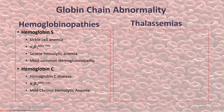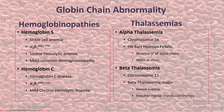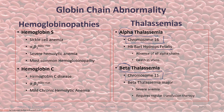Thalassemias are named according to the chain that is reduced or absent during synthesis. We have alpha thalassemia for the alpha chain being affected, beta thalassemia for the beta chain, and also gamma thalassemia and so on. In alpha thalassemia there is a genetic mutation in chromosome 16, and in beta thalassemia there is a genetic mutation in chromosome 11. There are four types of alpha thalassemia. An example is hemoglobin Bart's hydrops fetalis, a condition where all of the alpha chains are missing — there are no alpha chains.